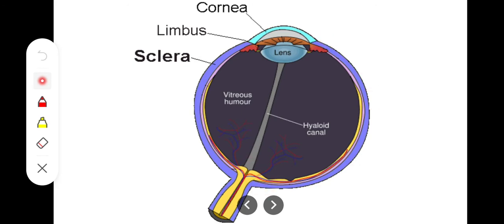The sclera is the opaque white of the eye. The central portion is the cornea, while the peripheral white of the eye is the sclera. The sclera is thickest posteriorly and thinnest at its anterior aspect. The point where the cornea meets the sclera is called the sclerocorneal junction or the limbus.